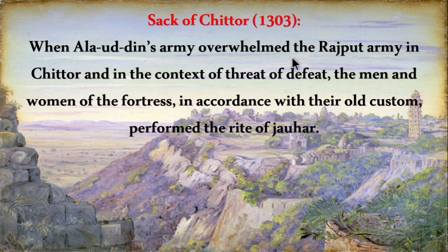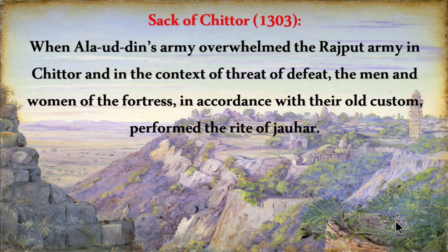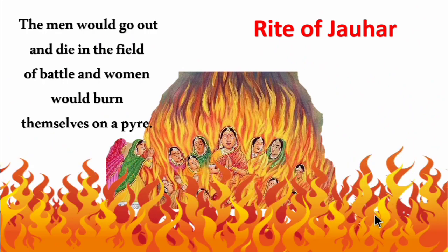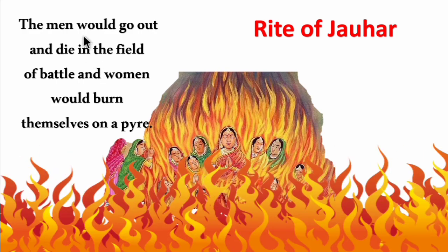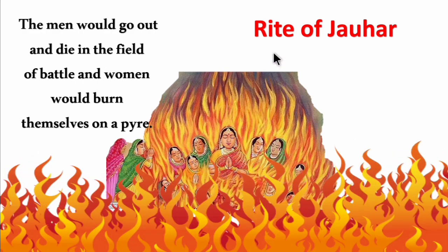When Ala Uddin's army overwhelmed the Rajput army in Chittor and defeat was imminent, the men and women of the fortress, in accordance with their old custom, performed the rite of Jauhar. In this rite, the men would go out and die in the battlefield, while the women would burn themselves on the pyre. This is called the rite of Jauhar.